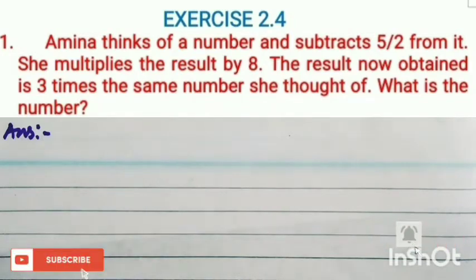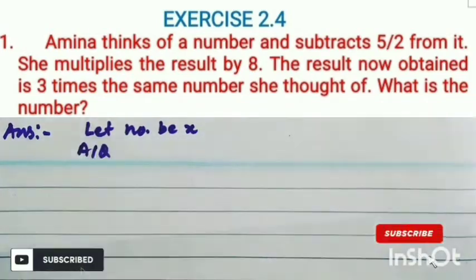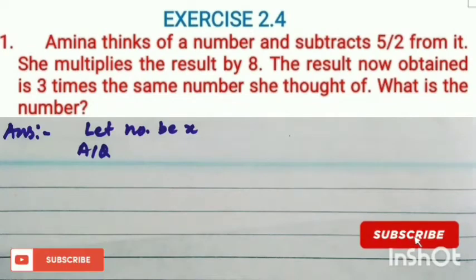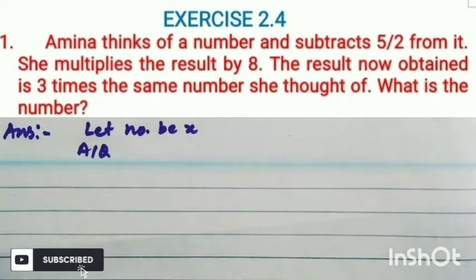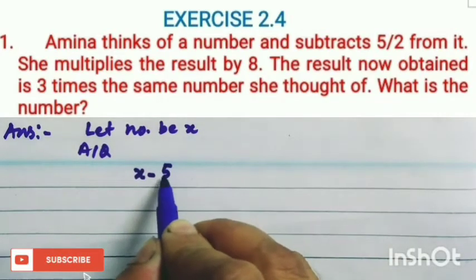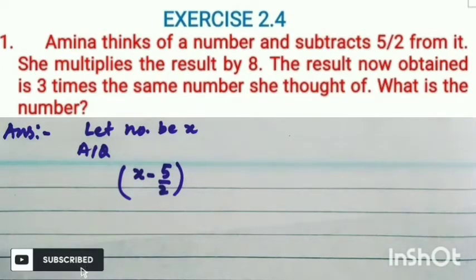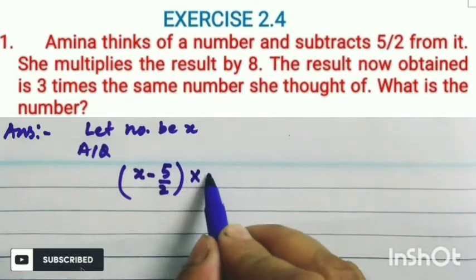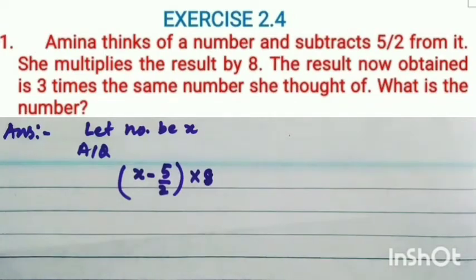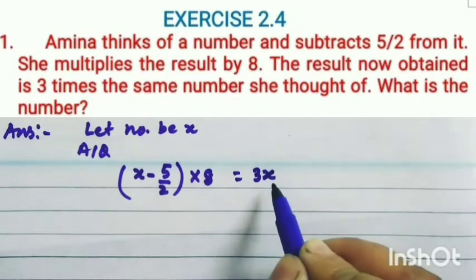At first, Amina thinks of a number. Let the number be x. According to the question, Amina subtracts 5 by 2 from it, that is x minus 5 by 2. She multiplies the result by 8. The result now obtained is 3 times the same number she thought of, that is 3x.